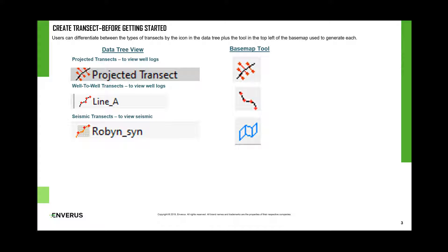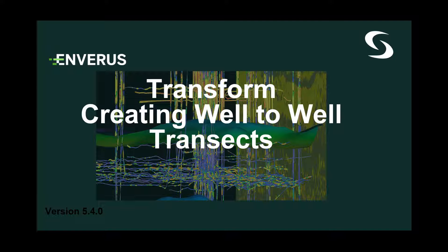Users can differentiate between the types of transects by the icon in the data tree plus the tool in the top left of the base map used to generate each. In the data tree view, you can see the projected transects icon and base map tool, well-to-well transects icon and base map tool, and seismic transects icon and tool used to view seismic.